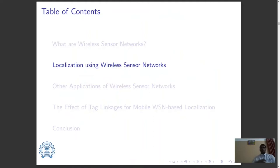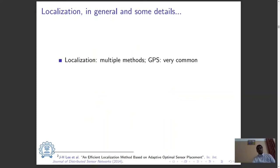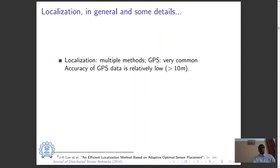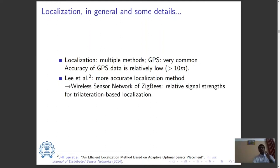Let's look into how localization can be done using wireless sensor networks. In general, localization can be done using multiple methods and GPS is a very common technique. However, the accuracy of GPS data is relatively low at about 10 meters or even worse. Lee and others have suggested a more accurate localization method that includes wireless sensor networks of ZigBees wherein the relative signal strength, RSSI, is used for trilateration based localization.